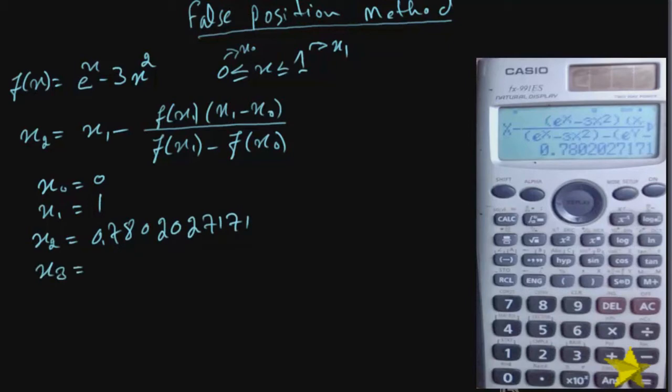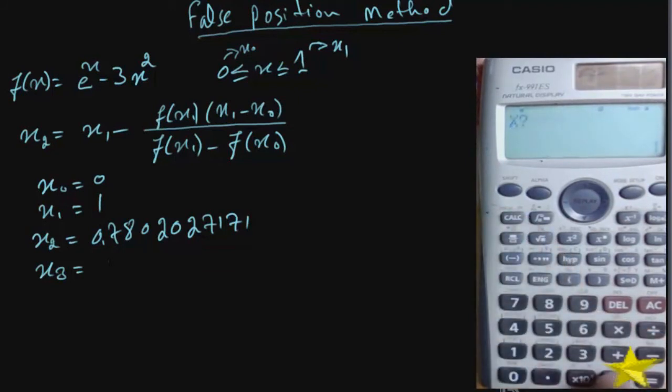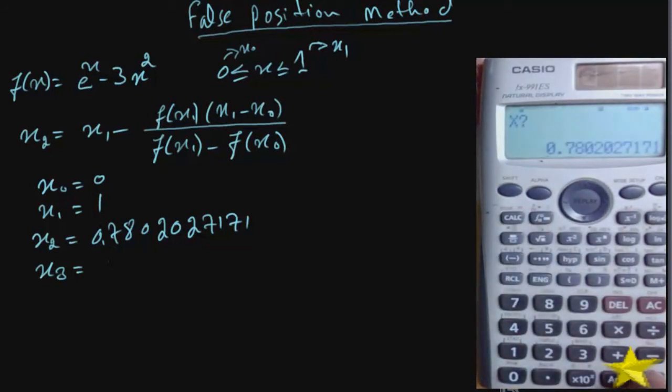Now to find x3, write down the actual function, e raised to the power x minus 3x square. Press calc, and when you ask for value of x, press ans to enter the value of x2. So the value of function on x2 is positive, while the value of function on x1 is negative. So the two points for the next iteration is x1 and x2. x2 is the recent one. I replace it with x, while x1 with y. So for the second iteration, when I press calc, it asks for x. But the x2 is already stored, and the calculator just press equal, and when it asks for y, enter 1. x1, we got 0.9028667357, as x3.